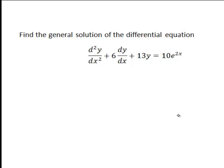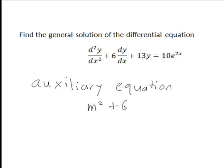The first thing we need to do is to find the auxiliary equation, otherwise sometimes known as the characteristic equation. And the auxiliary equation for this particular DE is going to be m squared plus 6m plus 13 equals zero. So you can see that's using the coefficients of y and the first and second derivatives to get this.